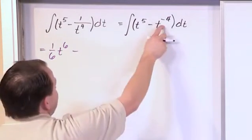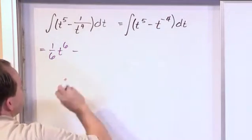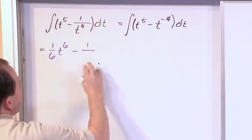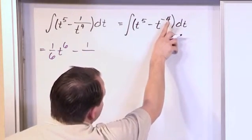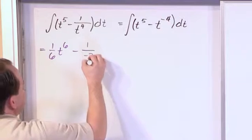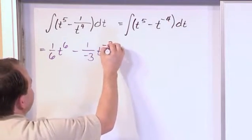The minus sign stays along for the ride. How would we integrate this one? Well, it looks different, but it's the same thing. 1 over, what is this exponent plus 1? Negative 4 plus 1 gives you negative 3. t to the negative 3 power.